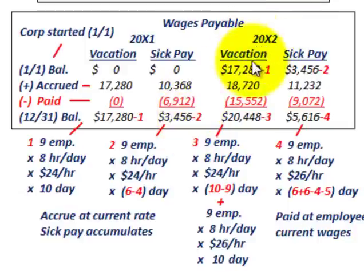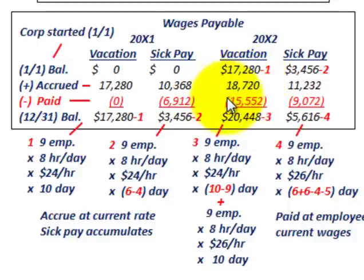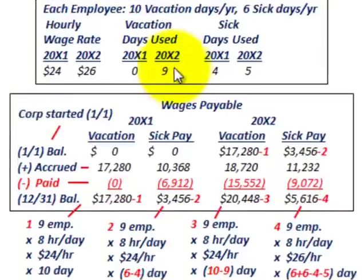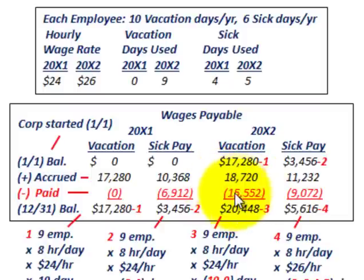For 20X2 vacation days, the beginning balance is the ending balance from 20X1: $17,280. The accrued amount at the new labor rate of $26 per hour — 9 employees, 8 hours per day — gives $18,720. They used 9 vacation days in 20X2, so the payout at $26 per hour is $15,552. Beginning balance plus accrued minus paid out gives an ending balance of $20,448 at December 31, 20X2.